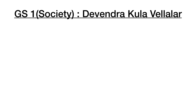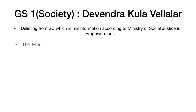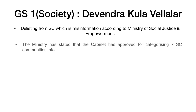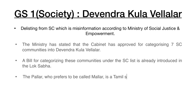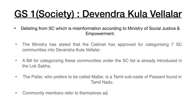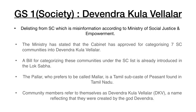The next headline is from GS Paper 1 — Society — about the Devendra Kula Vellalar community. The headline talks about the delisting of a community from SC, which the Ministry of Social Justice and Empowerment has called misinformation. The Ministry stated that the Cabinet has approved categorizing seven SC communities into Devendra Kula Vellalar. A bill for categorizing these communities under the Scheduled Caste list has already been introduced in the Lok Sabha. The Pallar, who prefer to be called Mallar, are a Tamil subcaste of peasant farmers found in Tamil Nadu. Community members refer to themselves as Devendra Kula Vellalar (DKV), a name reflecting that they were created by god Devendra.